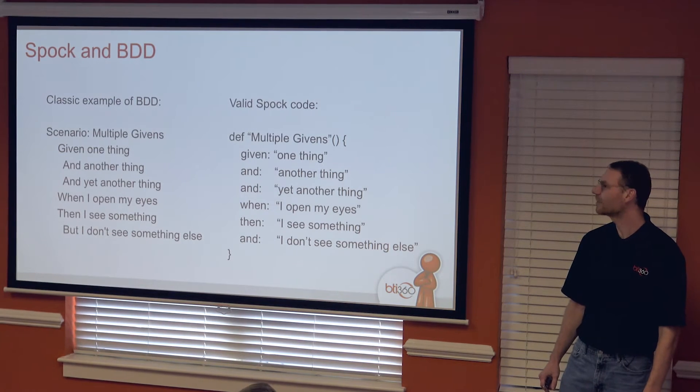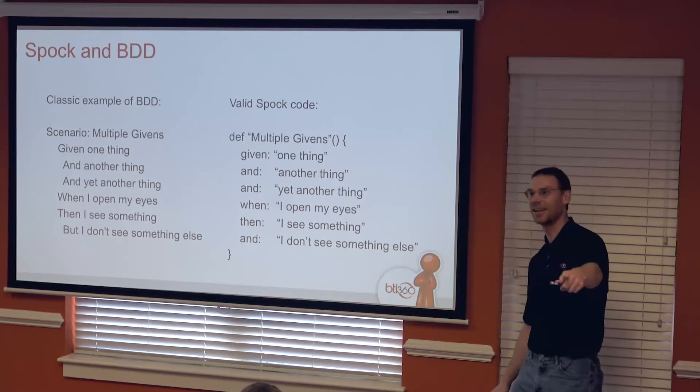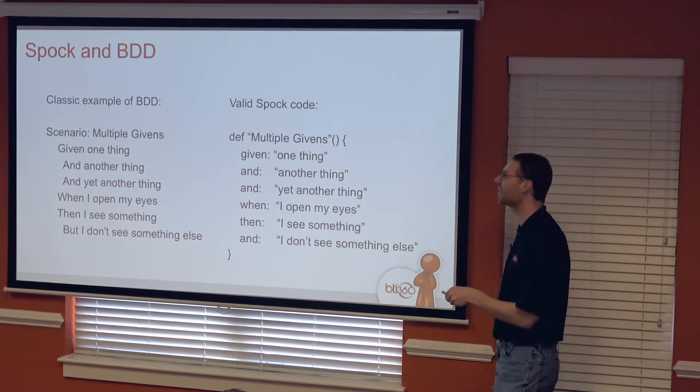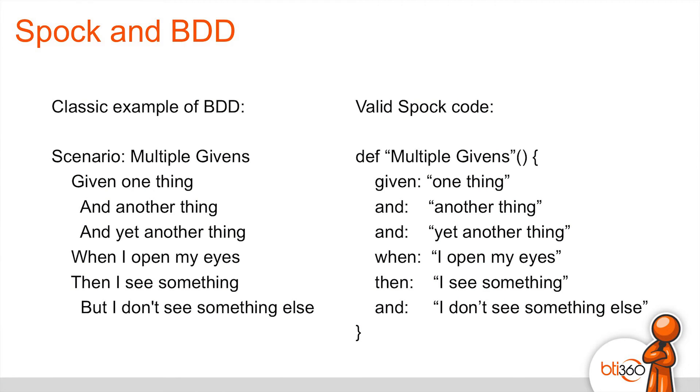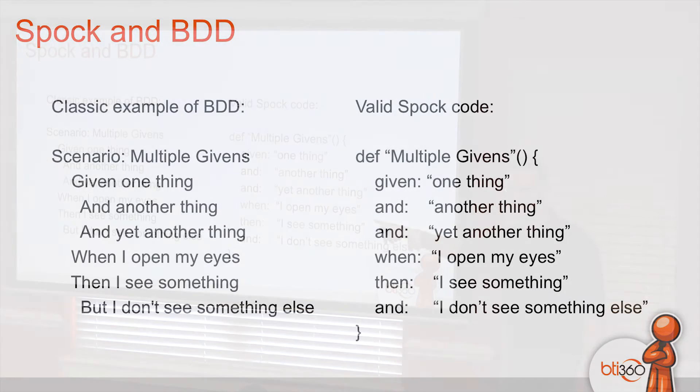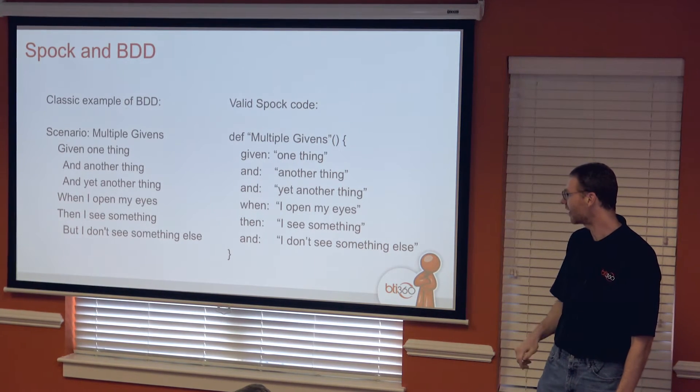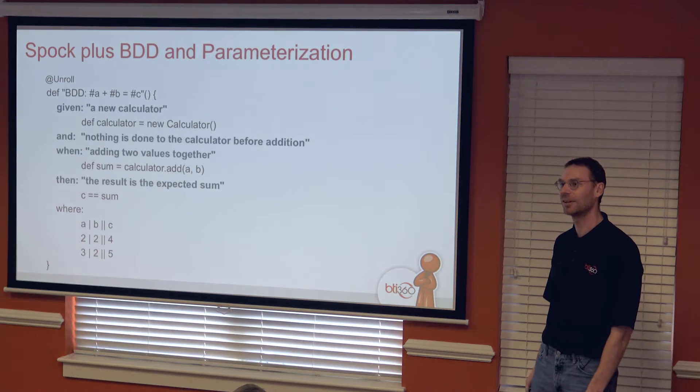So, who here does behavior-driven design or actually knows anything about that? A couple of hands. All right. So, there's this classic example. You get this scenario. Multiple givens. Given one thing, and another thing, and yet another thing. When I open my eyes, then I see something, but I don't see something else. That's actually what, if your tool can handle that, that's a great thing. This thing on the right, that is actual valid Spock code. You can write that, and it's not going to blow up. Now, you're not actually testing anything, because these are sort of labeled placeholders, but it's more interesting when you combine it and actually put it in with something.